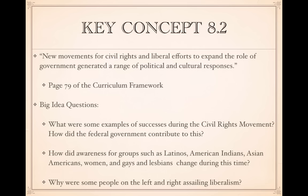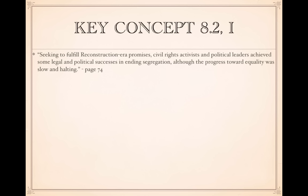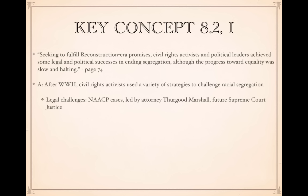Roman numeral one states: seeking to fulfill Reconstruction-era promises, civil rights activists and political leaders achieved some legal and political successes in ending segregation, although progress toward equality was slow and halting. After World War II, civil rights activists used a variety of strategies to challenge racial segregation. Be familiar with the different types of strategies — this could be a great short answer question.